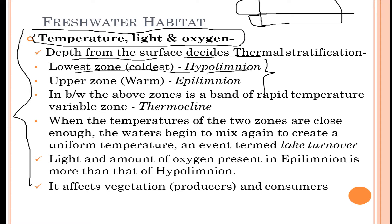In the upper zone there is a band of rapid temperature variation called the thermocline. In the upper zone, good regulation of temperature occurs due to the presence of sunlight, and all necessary conditions are satisfied — this region is known as the thermocline.